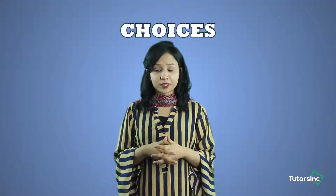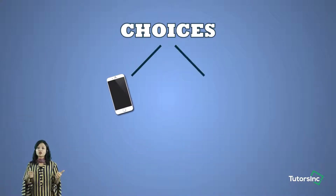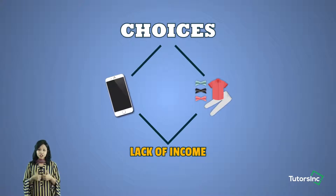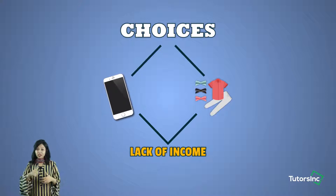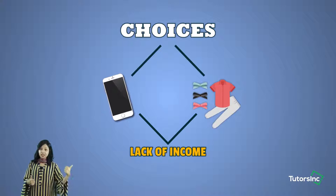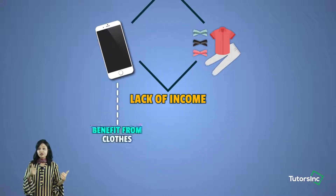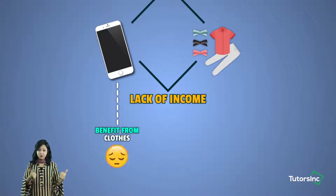For example, on an individual level, we have to face a lot of choices every day. We might want to buy a new phone, but we also want to buy new clothes. Due to a lack of income — because we are very young and might not be earning our own keep — we have to choose between buying clothes or buying a new phone. If you choose to buy a new phone, the benefit we get from buying the clothes is given up.